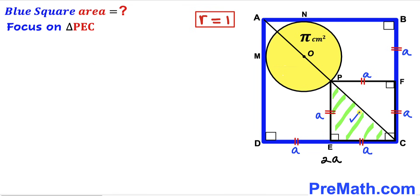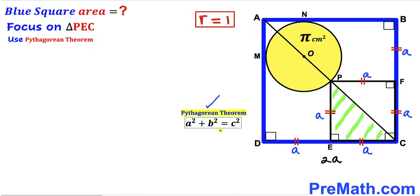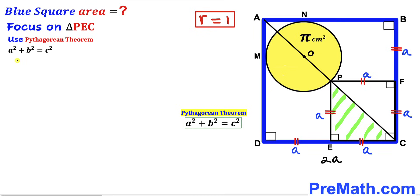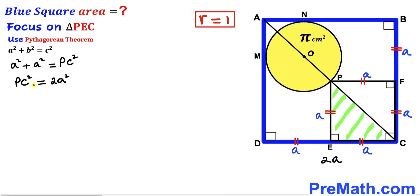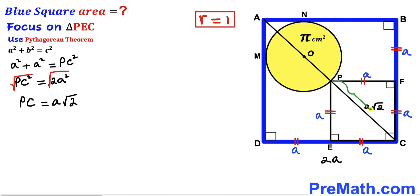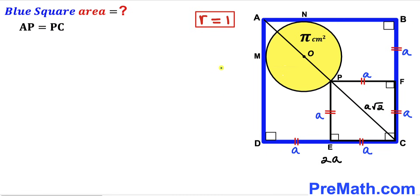Now let's focus on right triangle PEC and apply the Pythagorean theorem. Here, PC is the hypotenuse, and the two legs are each lowercase a. Filling in the formula: a squared plus a squared equals PC squared, which gives 2a squared equals PC squared. Taking the square root on both sides, PC equals a times the square root of 2.